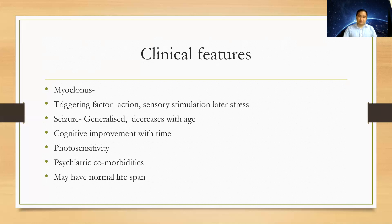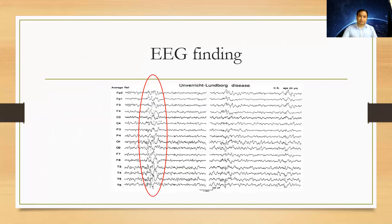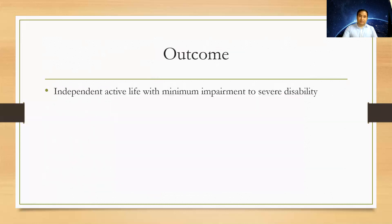Interestingly, the seizures decrease with age, and there may even be cognitive improvement over time. It is usually photosensitive, and there can be concomitant psychiatric comorbidities. Patients may have a normal lifespan. On EEG, epileptiform discharge from all leads is seen on a slowing background. Most patients will have an independent active life with minimum impairment to severe disability.